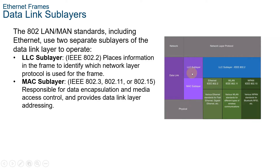The LLC sublayer, or logical link control, is the IEEE 802.2 sublayer that communicates between the networking software at the upper layers and the device hardware at the lower layers. It places information in the frame that identifies which network layer protocol is being used, allowing multiple Layer 3 protocols such as IPv4 and IPv6 to use the same network interface and media. The MAC sublayer — IEEE 802.3, 802.11, and 802.15 — is implemented in hardware and is responsible for data encapsulation and media access control. It provides data link layer addressing and is integrated with various physical layer technologies.